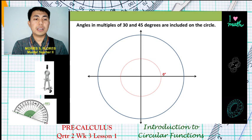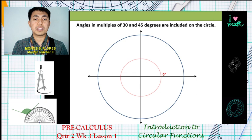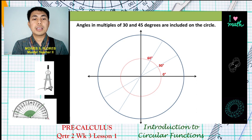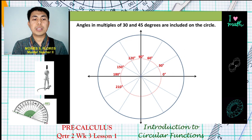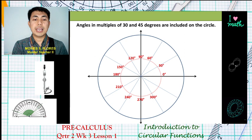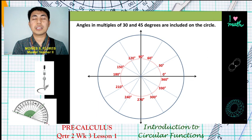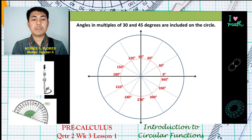Let us show the angles included in the unit circle in terms of degrees. The multiples of 30 degrees are: 30, 60, 90, 120, 150, 180, 210, 240, 270, 300, 330, and 360 degrees — that's one full revolution.